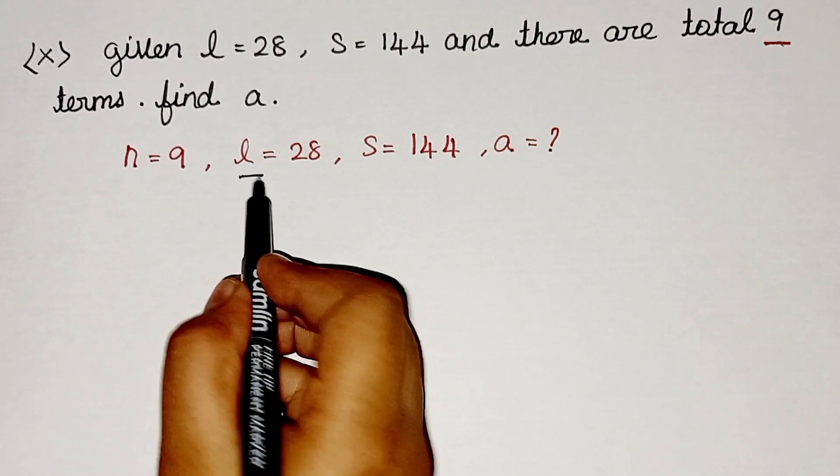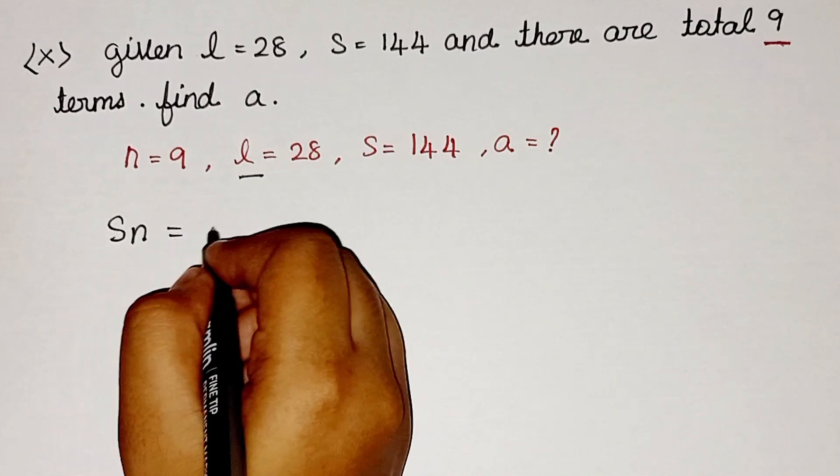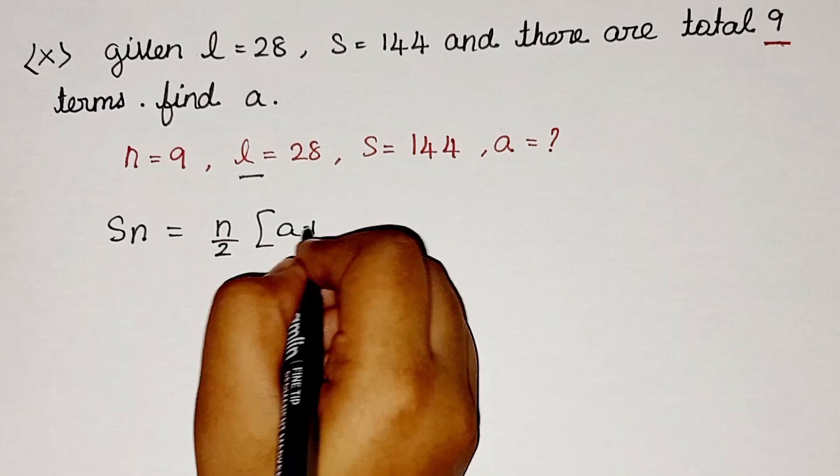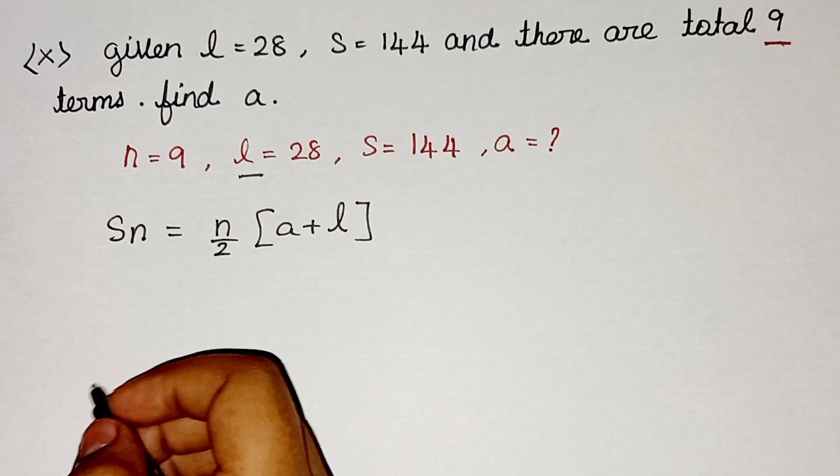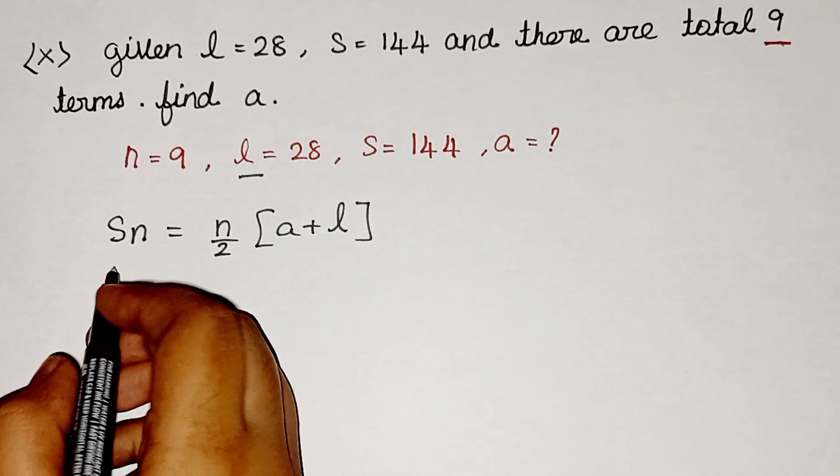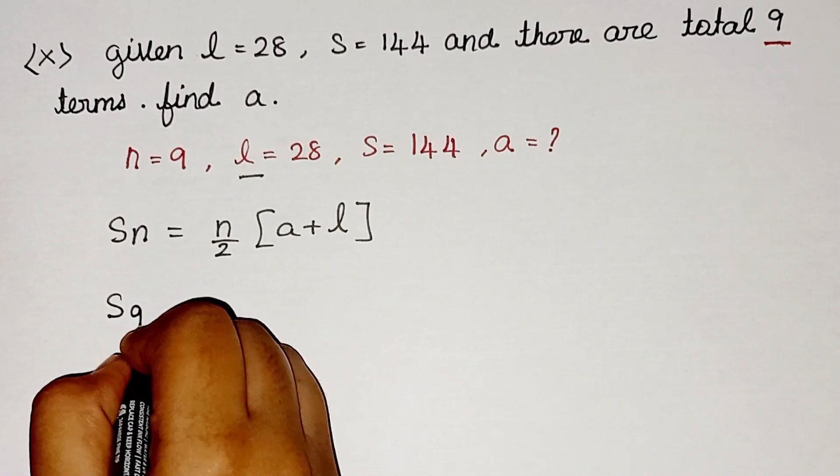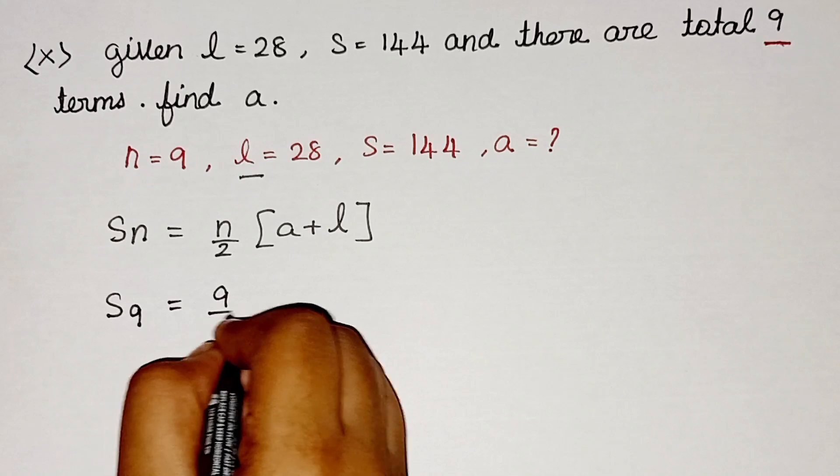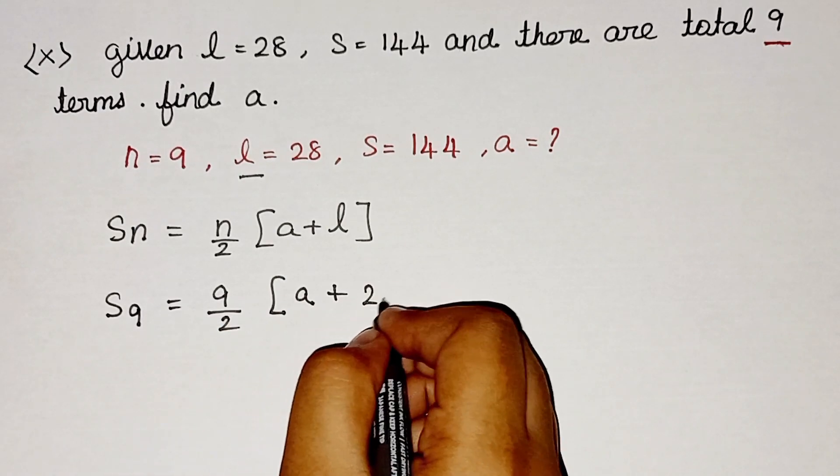Since I have L value, I am going to apply Sn = n/2[a + l]. Why did I apply this formula? Because I have L value. So here S is nothing but Sn. First of all, let's write S as it is, and then the n value is 9 is equal to here also 9/2, and a we don't know, plus L value is 28.